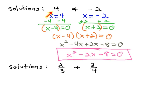The way we found that equation is we made each solution equal to x and then equal to 0, and used those as the factors of our polynomial.